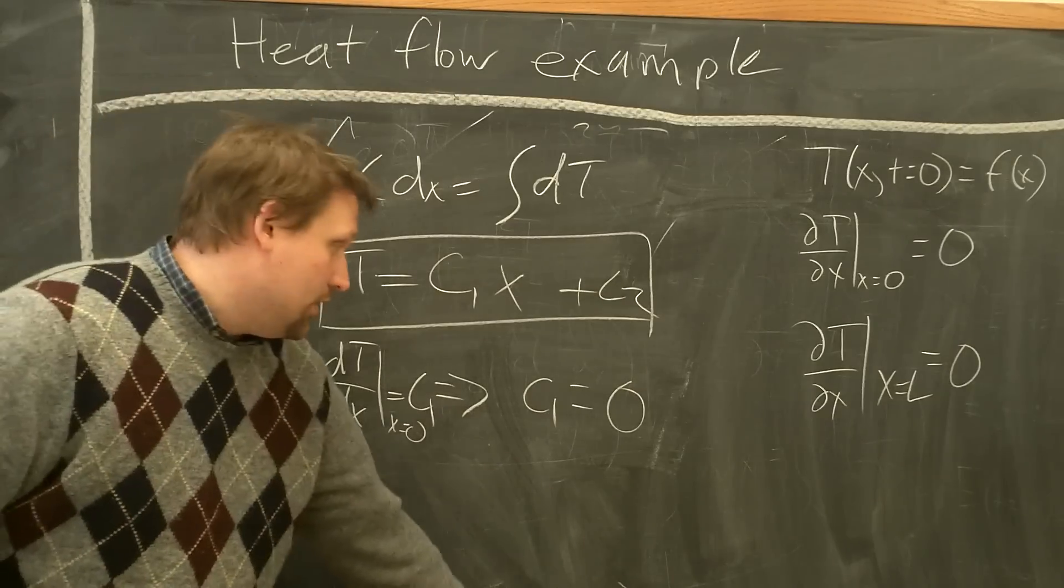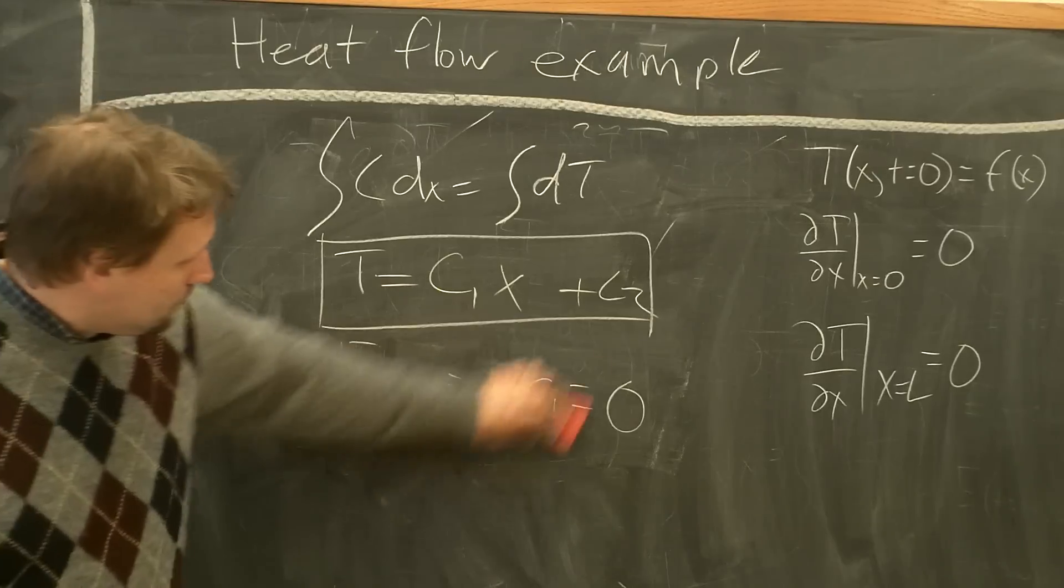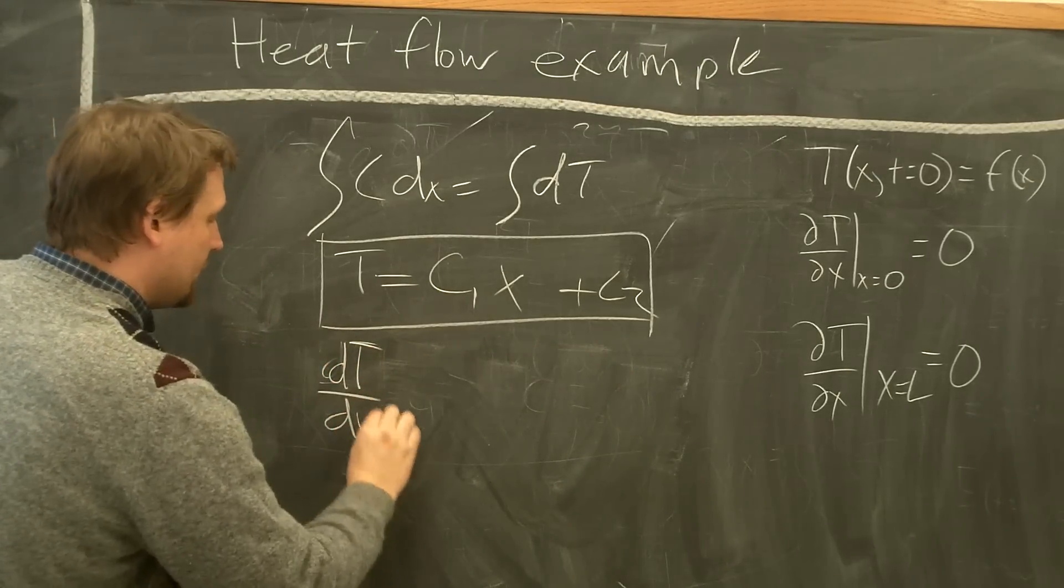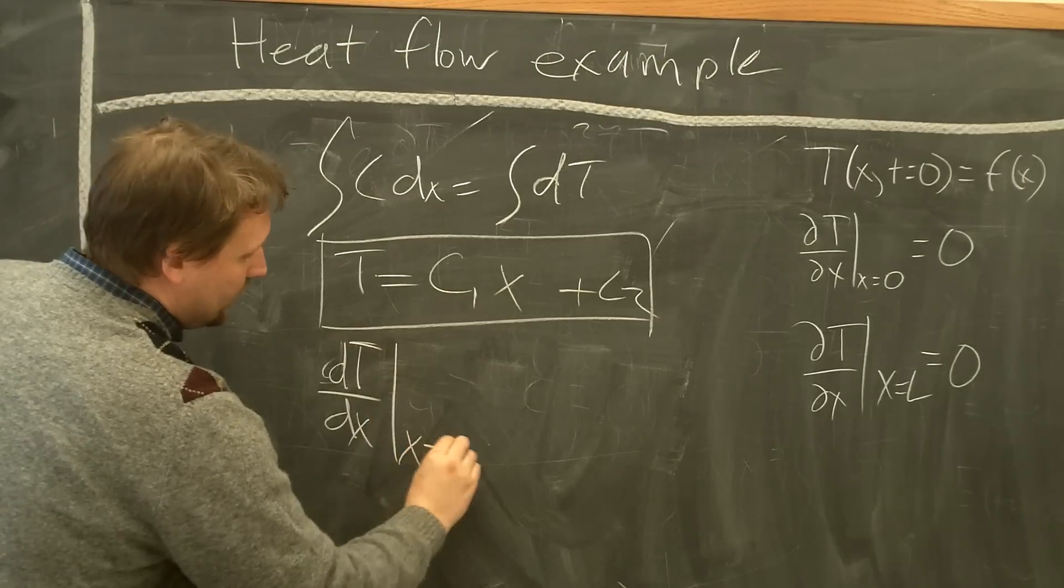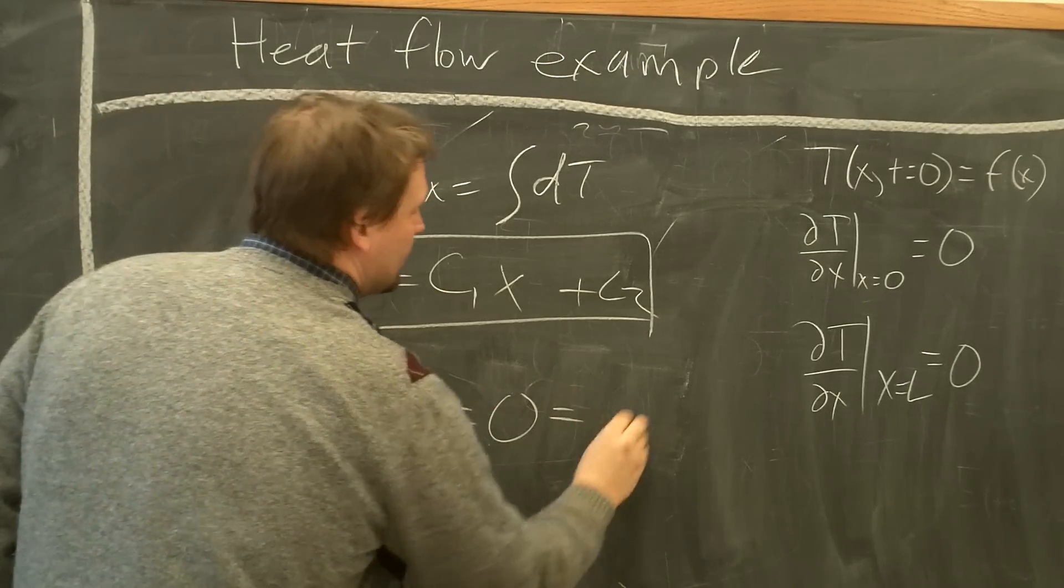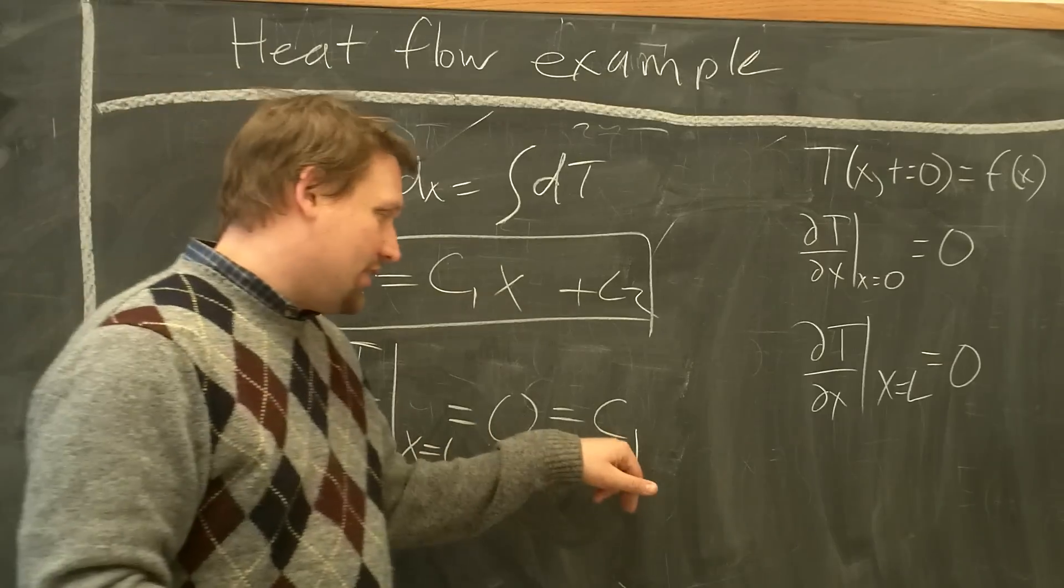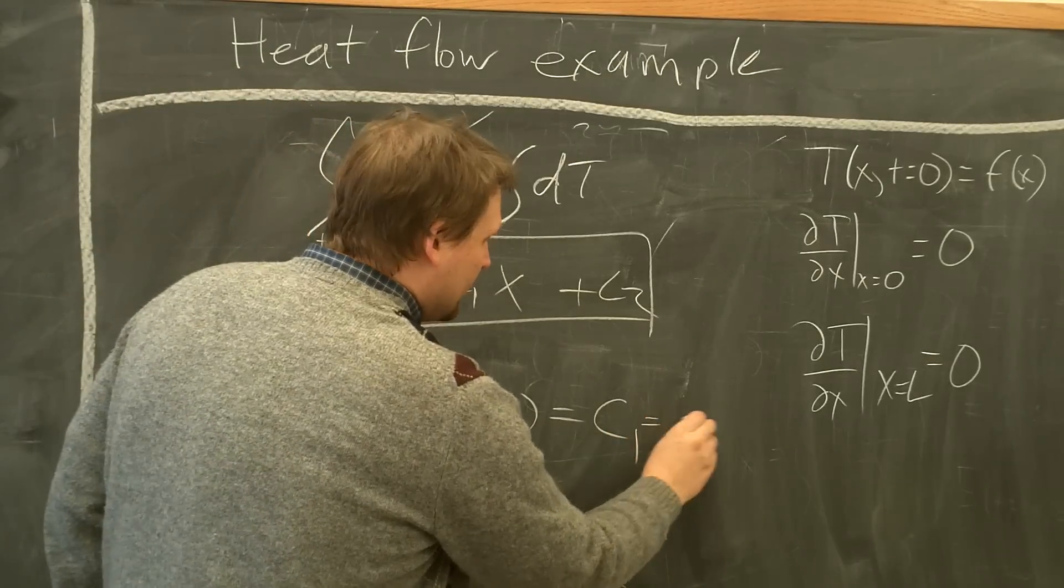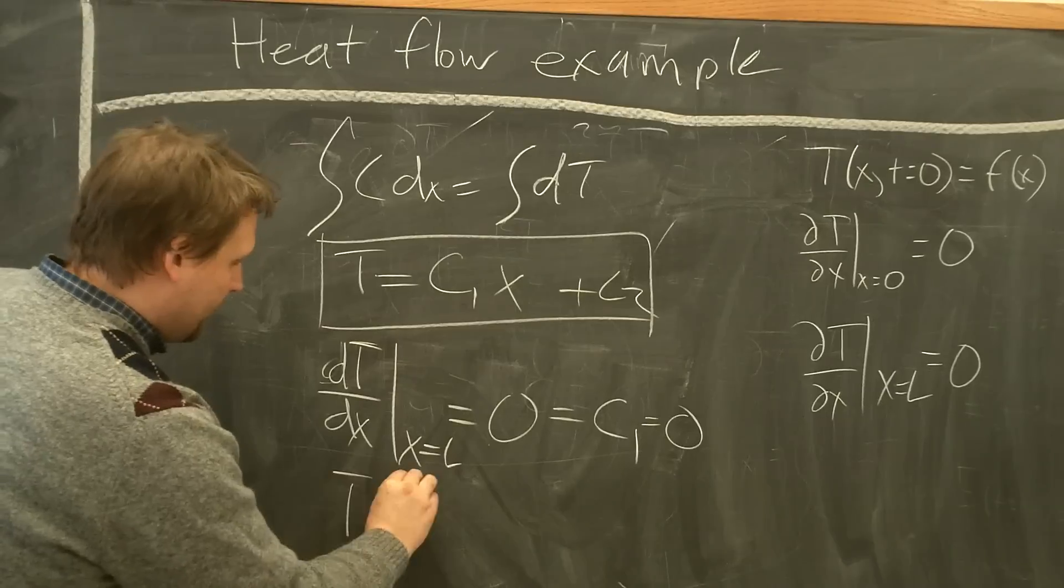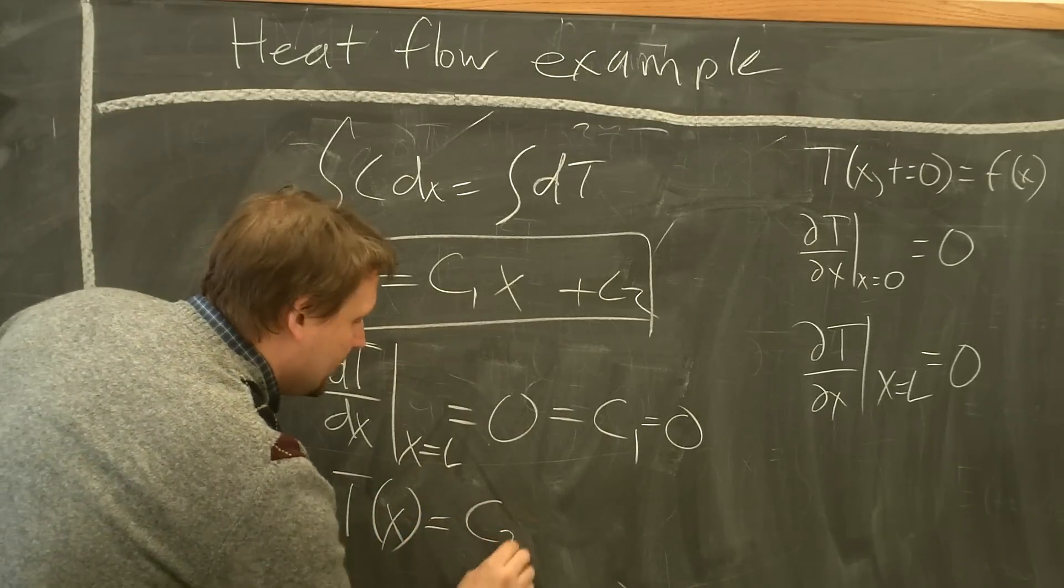Let's look at the second boundary condition. We have dt dx at x equals L equals 0 equals C1. So all we get out of both boundary conditions is the fact that C1 equals 0. So then our solution to the temperature distribution as a function of position, T as a function of x, must be equal to a constant C2.